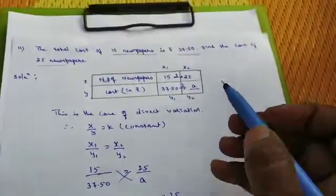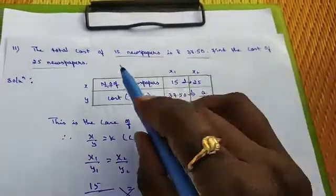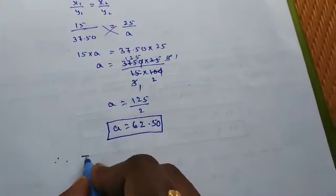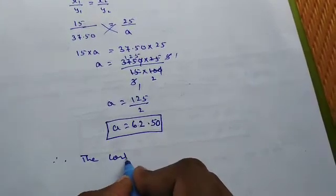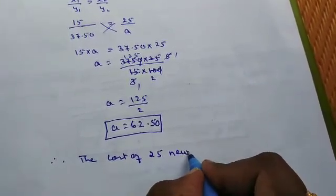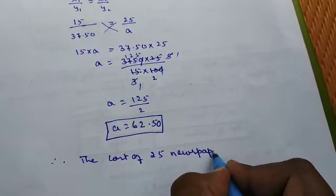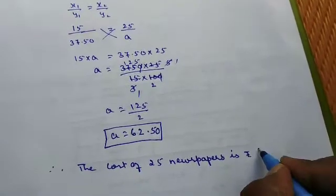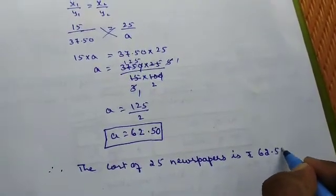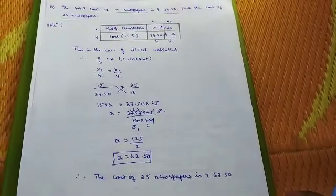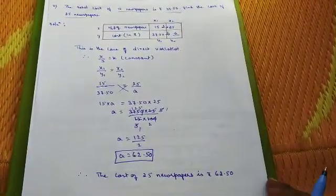So what he asked. The thing asked is find the cost of 25 newspapers. Give the conclusion. Therefore, the cost of 25 newspapers is rupees 62.50. That is 62 rupees 50 paise.